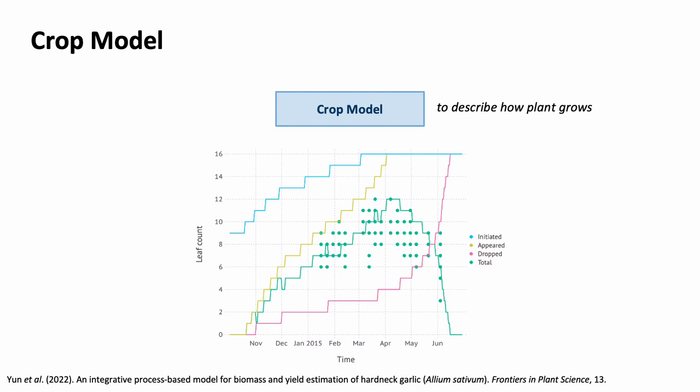Not just biomass, but other aspects of plant growth can also be simulated. This output shows the number of leaves and their life cycle.